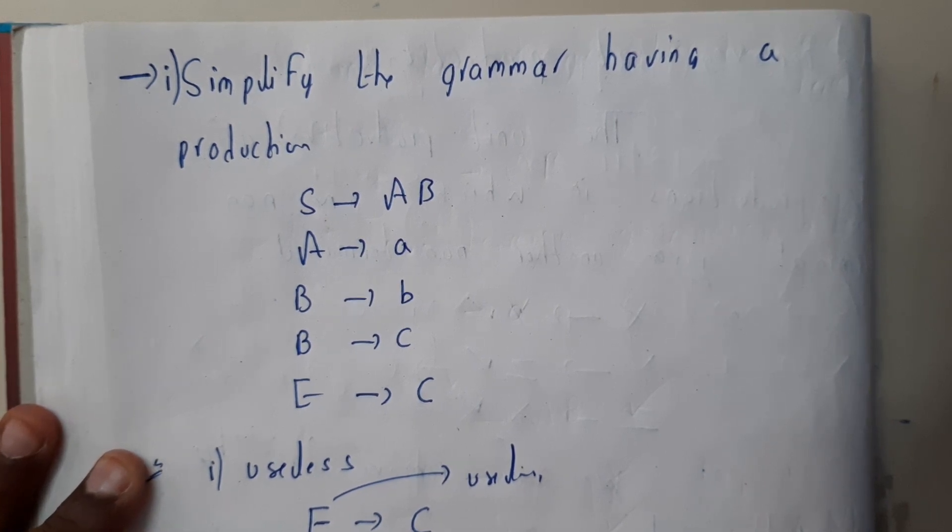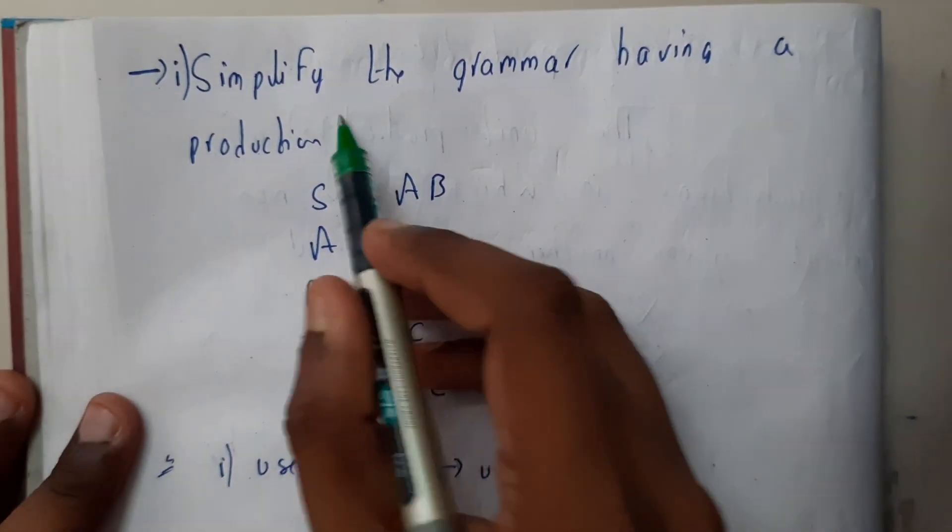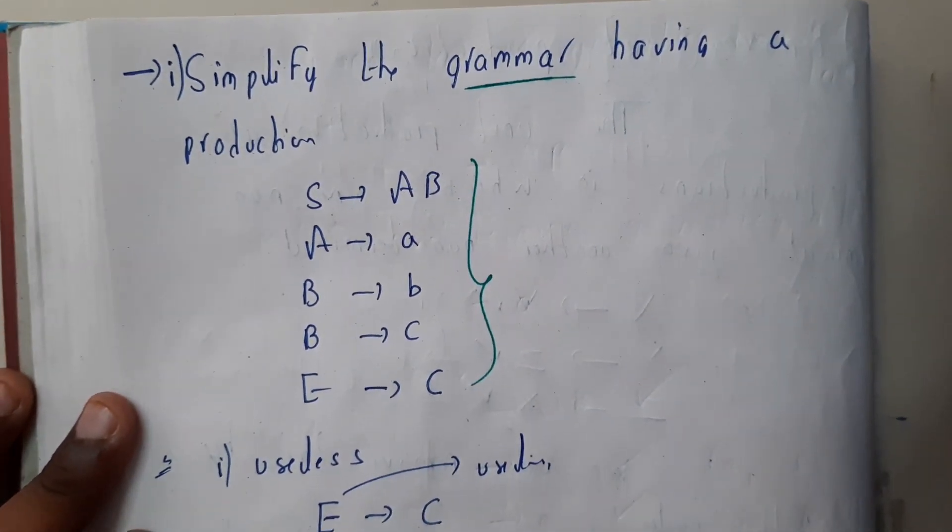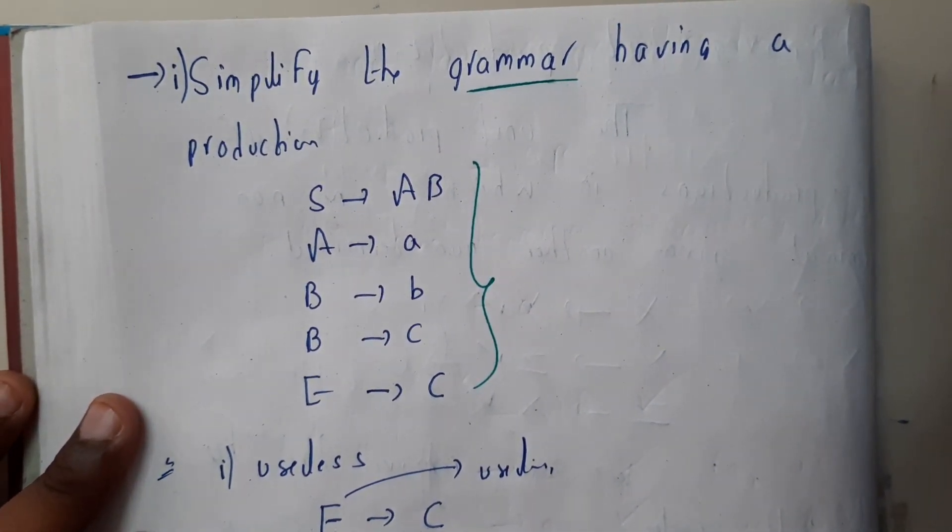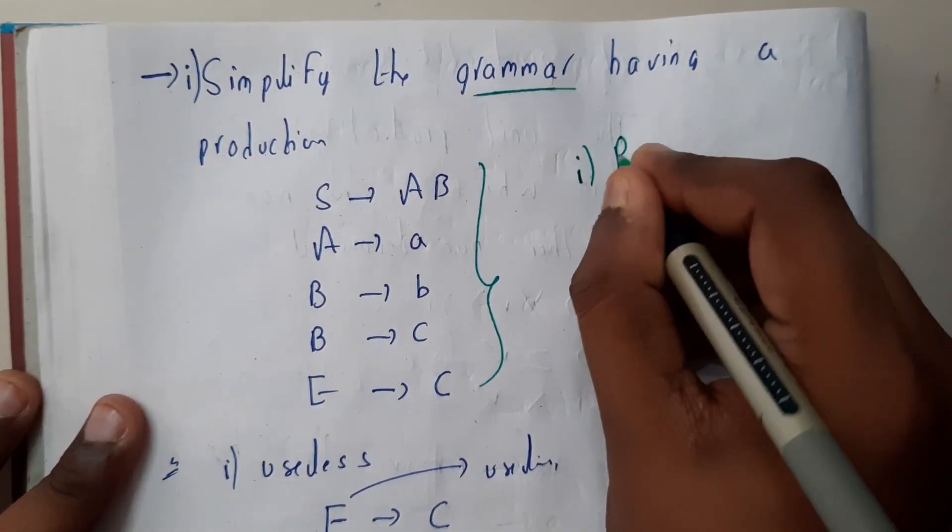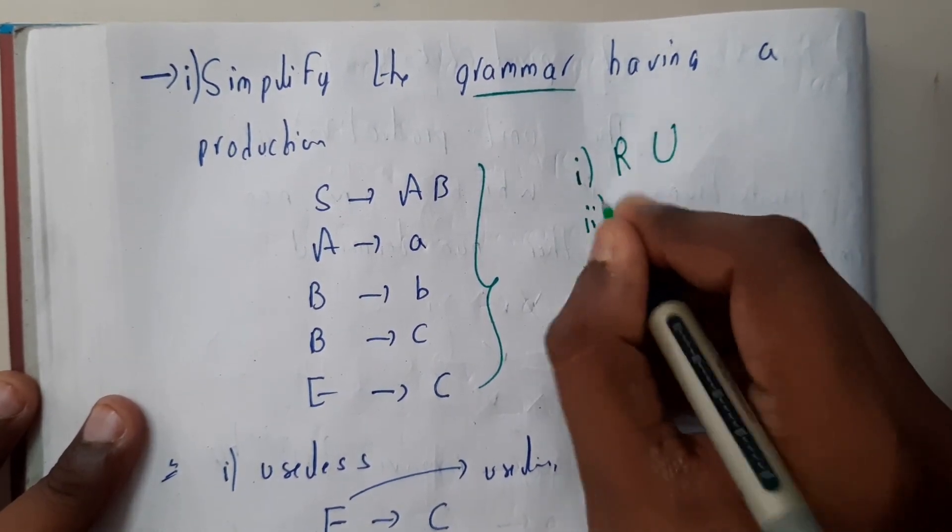Hello guys, we are back with our next tutorial. In this tutorial, let us try to reduce the production rules of the given questions. So simplify the grammar having the production. There are this many productions, guys. If you observe clearly, what are the things that are useless?